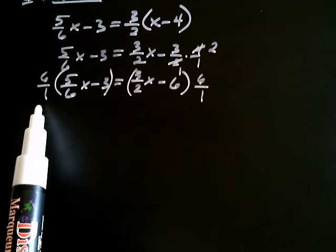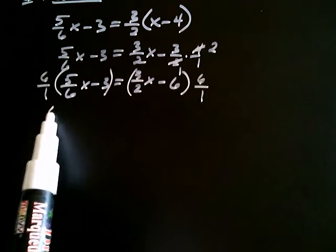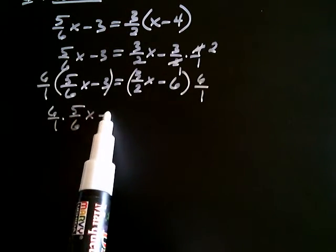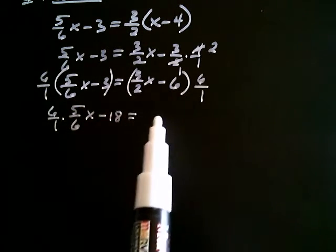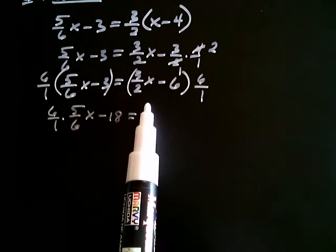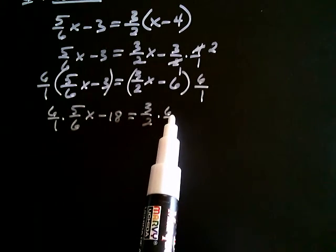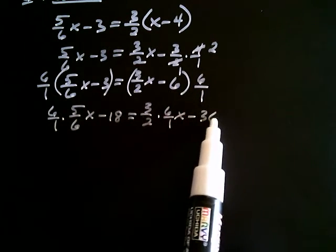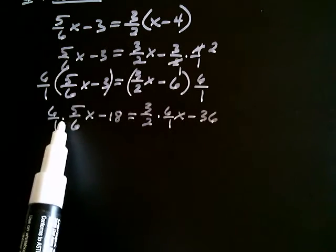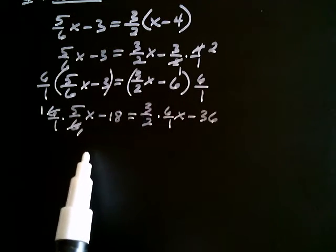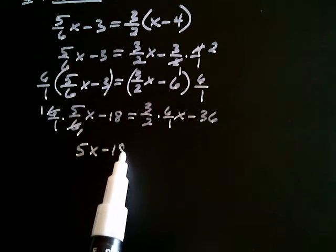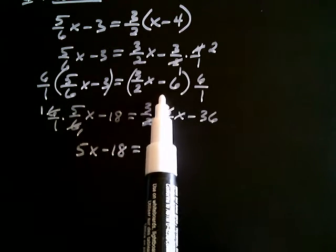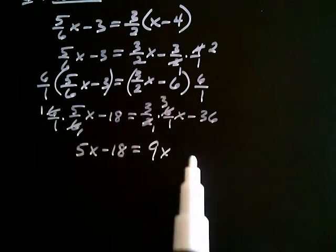Now you want to distribute the 6 over 1. So it's going to be 6 over 1 times 5/6x, and then positive 6 times negative 3 is negative 18. And on the right-hand side, same idea. It's going to be 3/2x times 6 over 1, and I still have that x, don't forget that, and then negative 6 times positive 6 is negative 36. The 6's here cancel, 6 and 6, I get a 1 and a 1, so I get 5x minus 18. And on the right-hand side, 2 goes into 2 once and 2 goes into 6 three times. 3 times 3 is 9x minus 36.